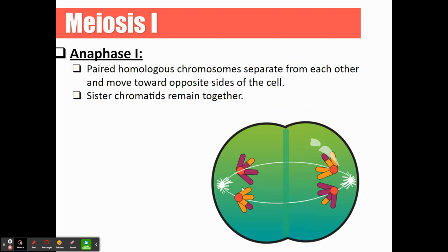In anaphase one — remember, anaphase starts with A and away starts with A — the paired homologous chromosomes are going to be pulled away to separate opposite poles of the cell. Our sister chromatids are going to remain together, but the homologous pairs have been separated.